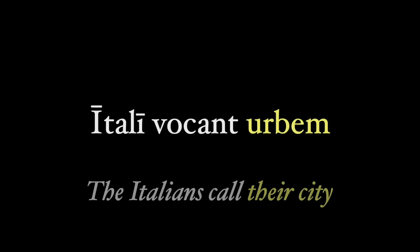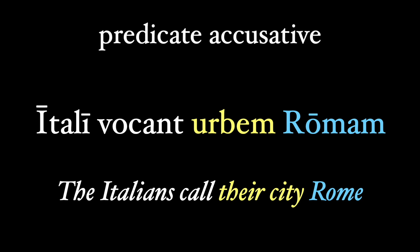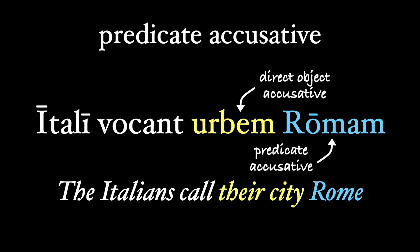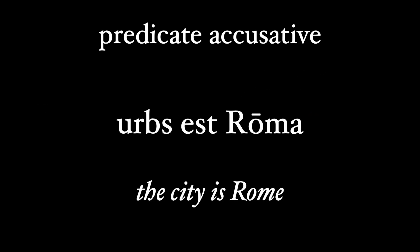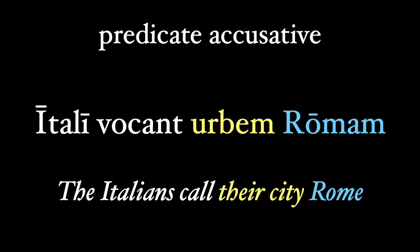So let's take a verb of calling. Voco is probably the easiest to work with. If we start off with a simple sentence, Itali vocant urbem — the Italians call their city — let's say they call their city Rome. We would put the name of the city in the accusative case, Romam, and this is known as a predicate accusative, because it's really in a predicate relationship to the other accusative, urbem, which is the direct object of the verb vocant. Think of the main idea as urbs est Roma, where the predicate is everything after the subject, here in blue. So when we put it in a construction with a verb like voco, it still remains in a quasi-predicate, even if it's in the accusative case.